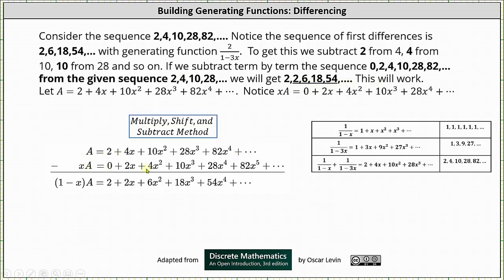So again, we multiply both sides of the equation by x. Because there's no constant term when multiplying by x, the constant term is zero, and then we subtract the two equations. Subtracting on the left, we have A minus xA, which can be factored into the quantity one minus x times A. On the right, subtracting, we have two minus zero which is two, plus four x minus two x which is two x, plus ten x squared minus four x squared which is six x squared, and so on. Looking at the right side of the equation, notice how we do have the generating series for the sequence that resembles the sequence of first differences, which is the sequence two, two, six, 18, 54, and so on.